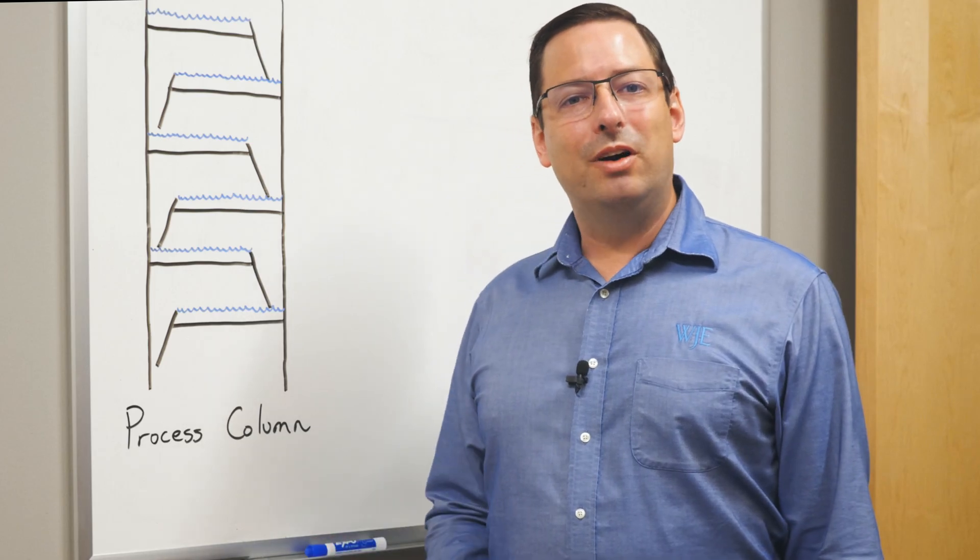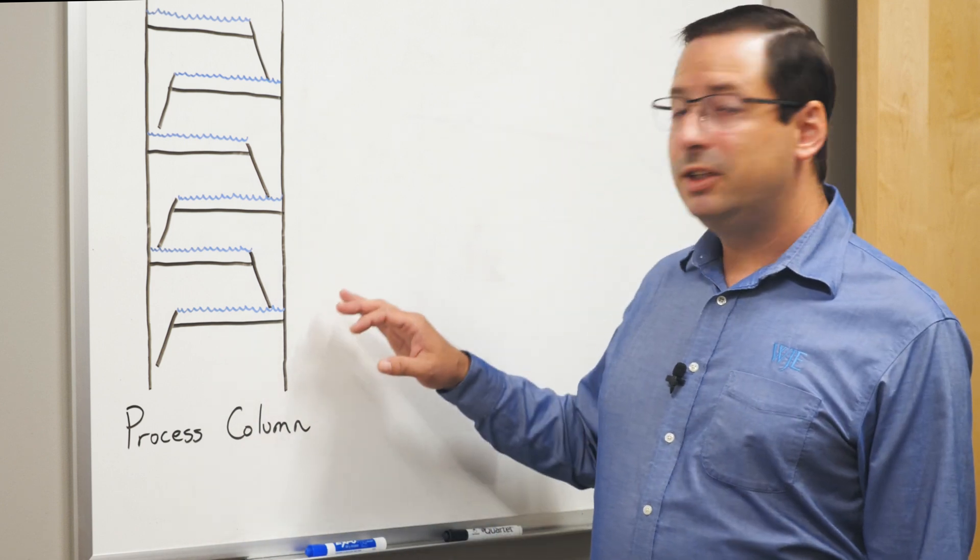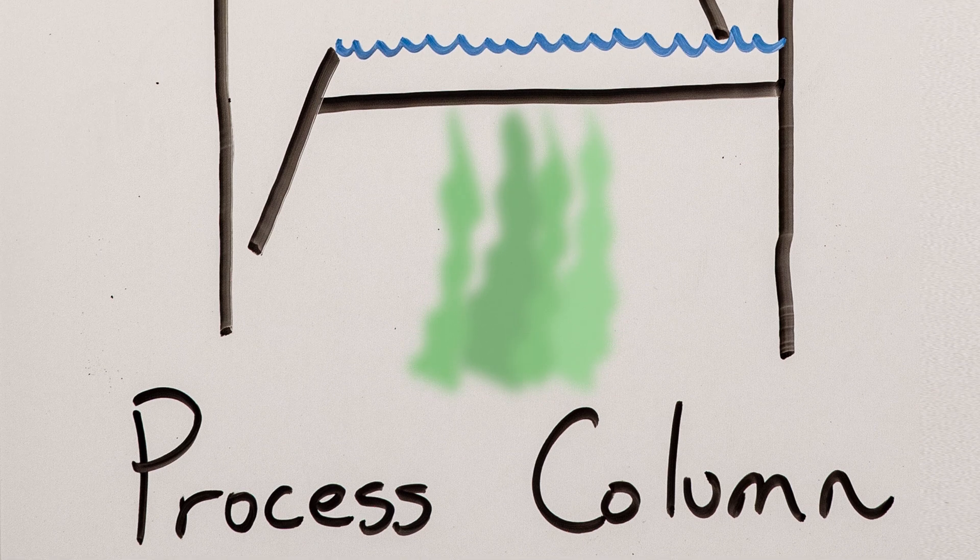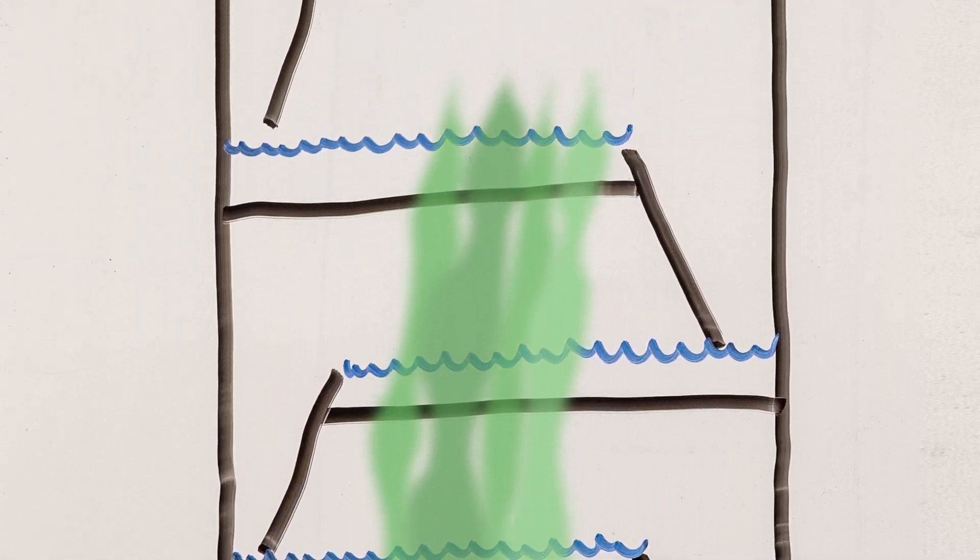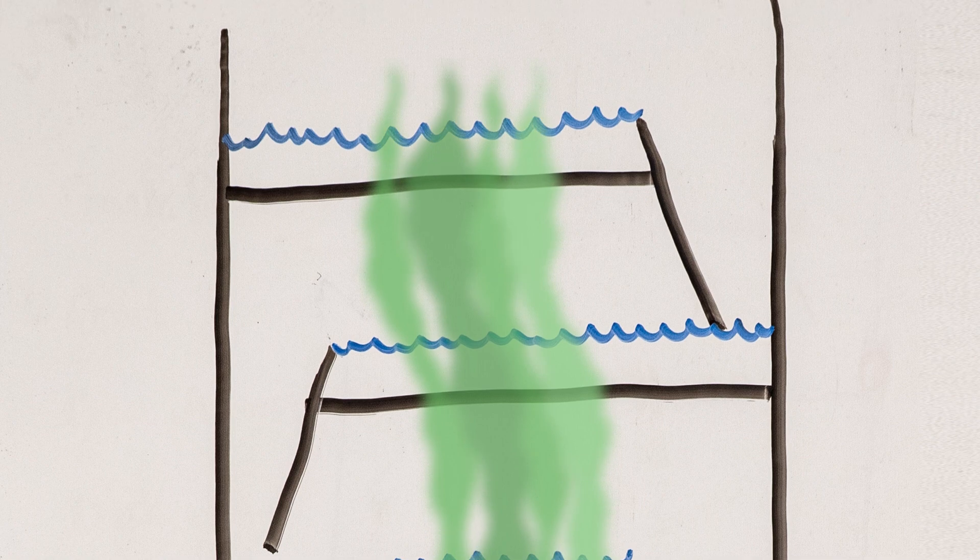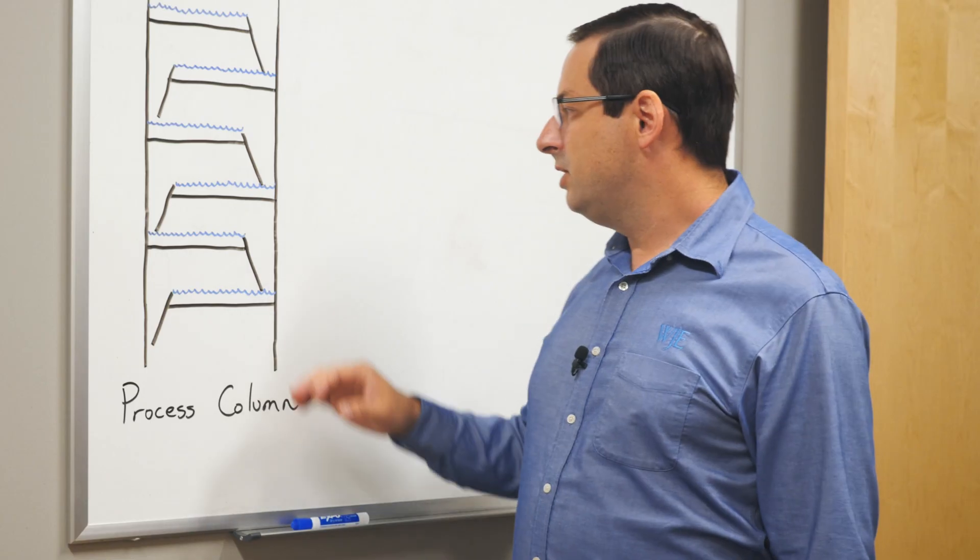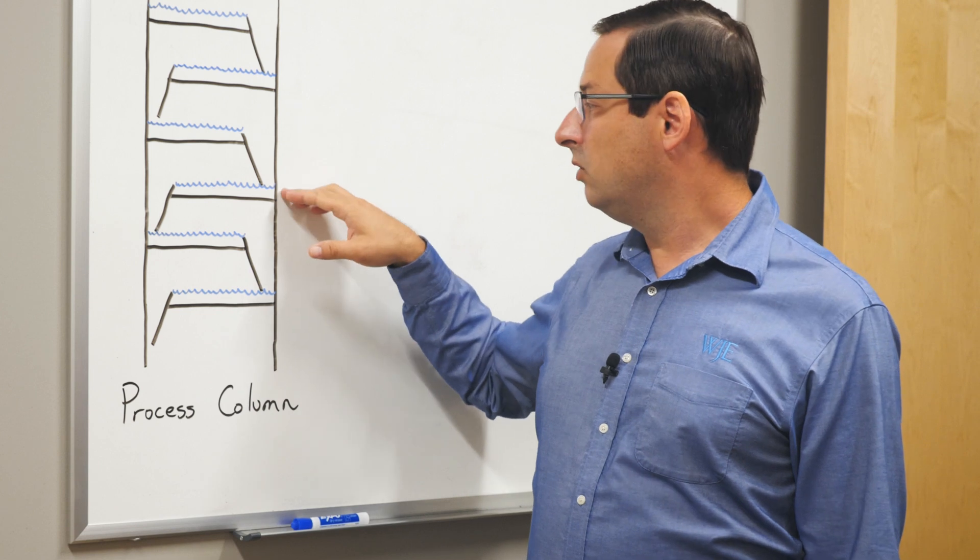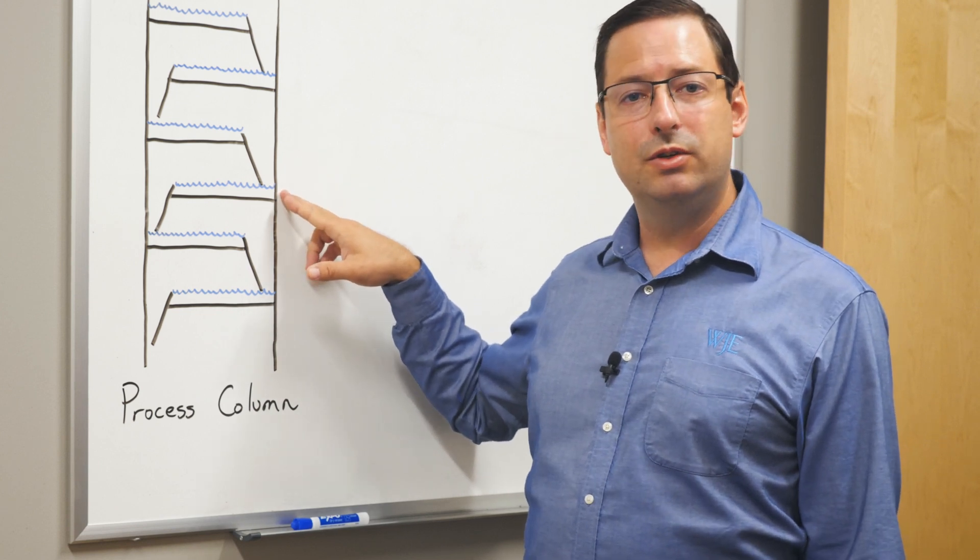An example from our recent work in the field is corrosion at tray rings in a process column. Vapors are passed through trays at each level which support a liquid level, and the liquid removes impurities from the vapor. At certain points in the column, impurities can collect and create corrosion in the splash zone of the tray ring.